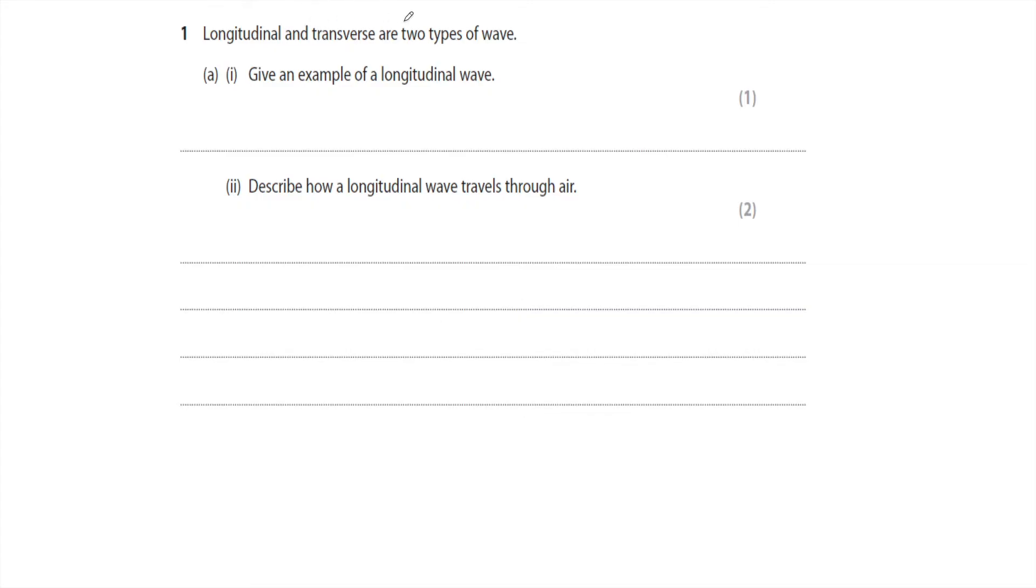Longitudinal and transverse are two types of wave. Give an example of a longitudinal wave. Well, of course the best one is sound waves, but you can also have P waves from earthquakes.